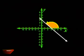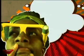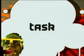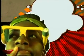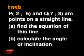Here's our task for today. P(−2, −5) and Q(7, 3) are points on a straight line. Find the equation of the line passing through the points and calculate the inclination of this line accurate to two decimal places.